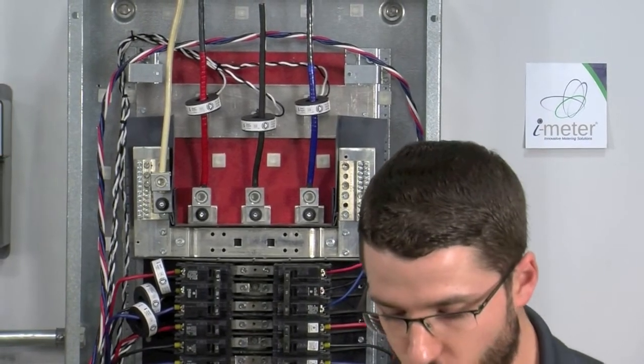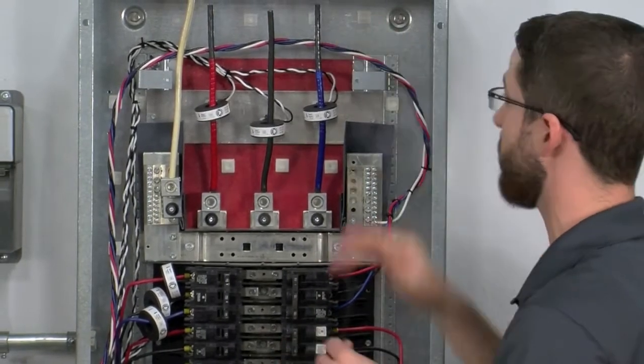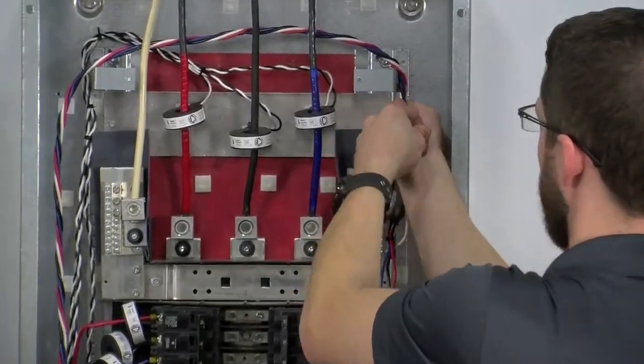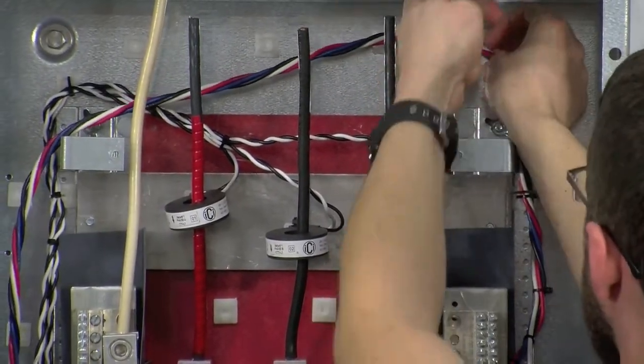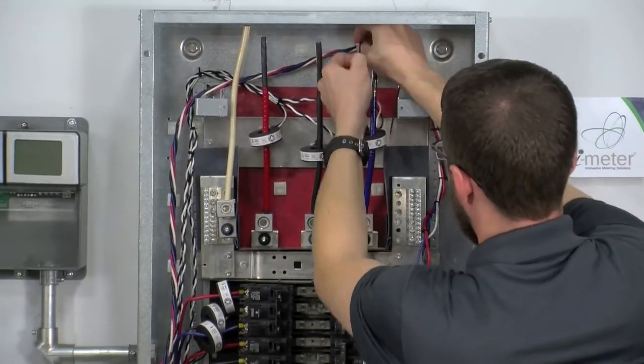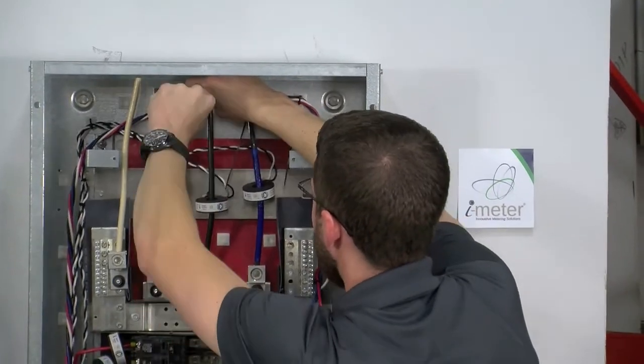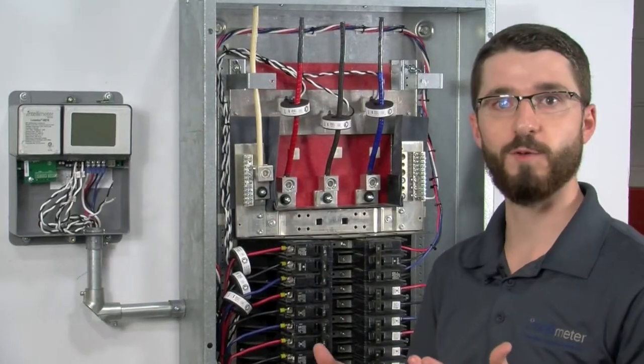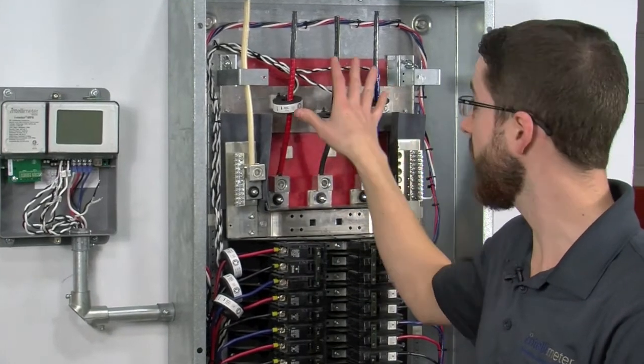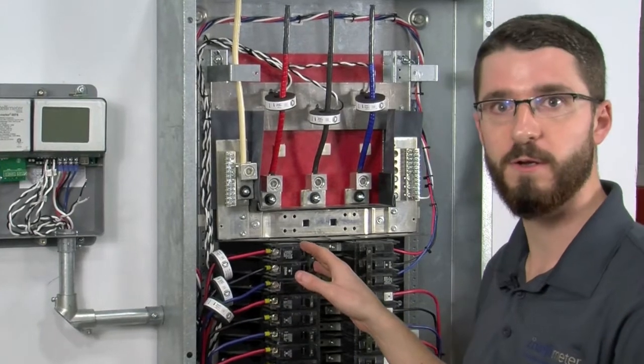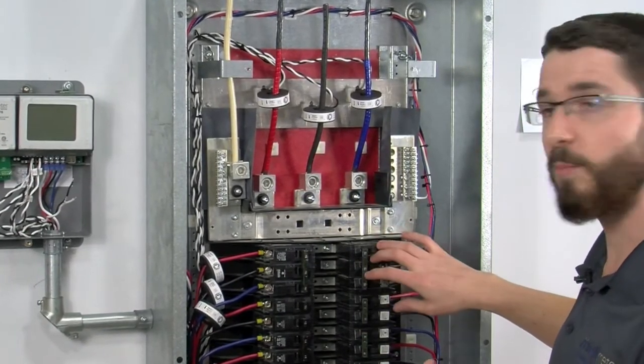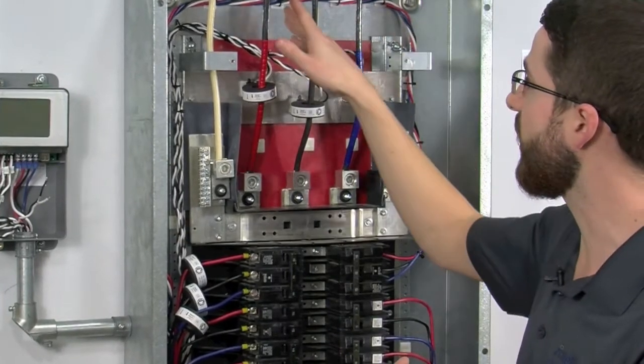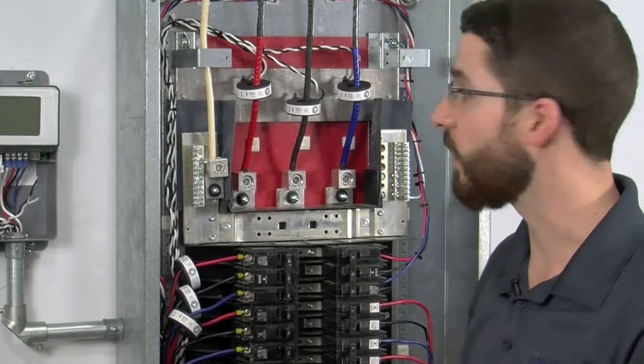So, once again, we're going to use zip ties in combination with adhesive mounting bases, to make for a nice clean install back to the meter. So, just to quickly sum up what we've done so far, we have CTs one, two, and three for our main. CTs four, five, and six for a three pole breaker, and we've got our reference voltage installed in a separate three pole 15 amp breaker. Everything is being run back to the conduit for the meter enclosure, and we've zip tied everything together, and used adhesive mounting pads wherever we can, to keep everything nice and clean.